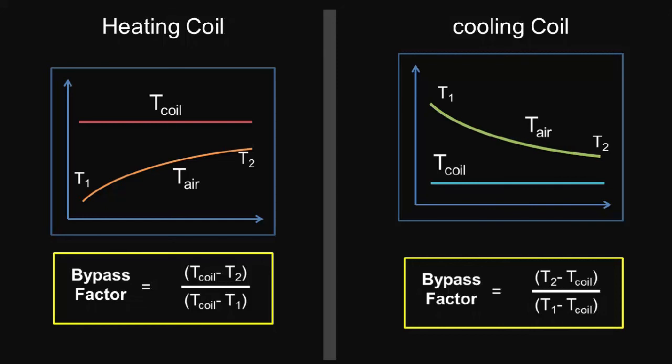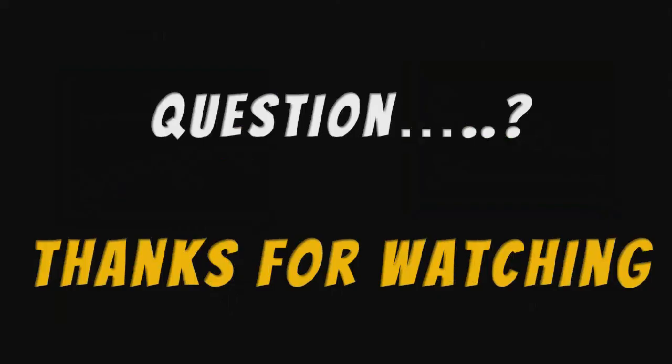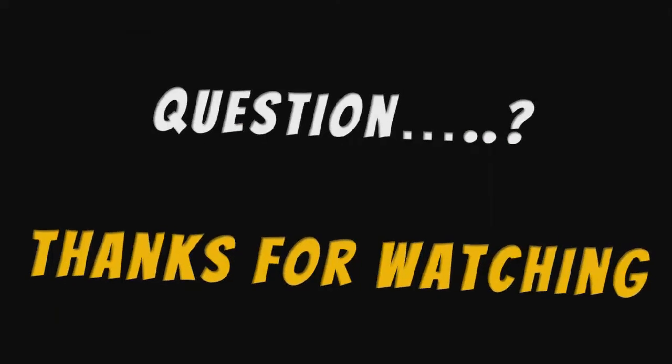The temperature distribution of air over a cooling coil can be shown in the figure. This is a simple explanation about bypass factor. Hope you understood. If you still have any questions, feel free to ask in the comment section.